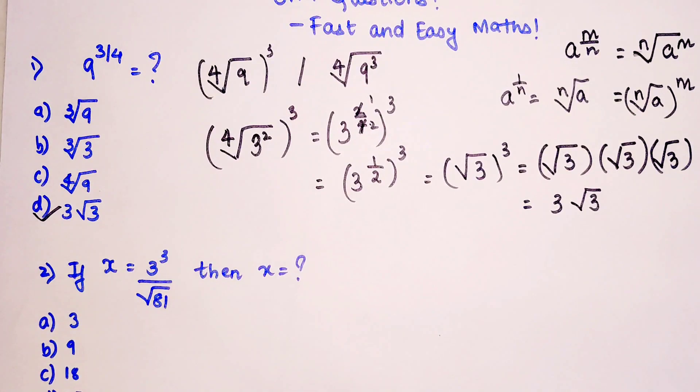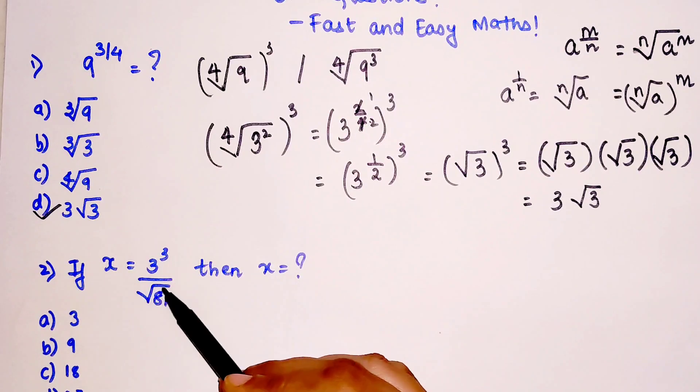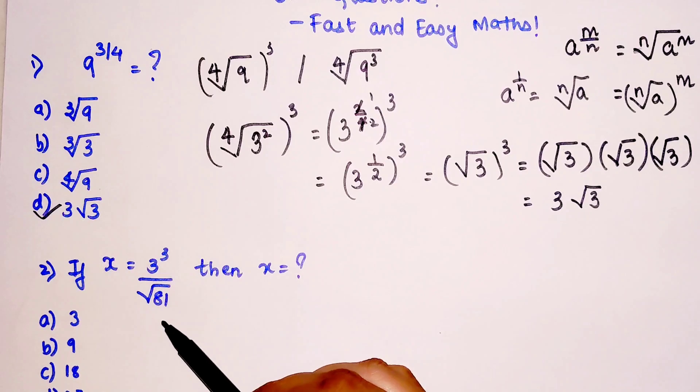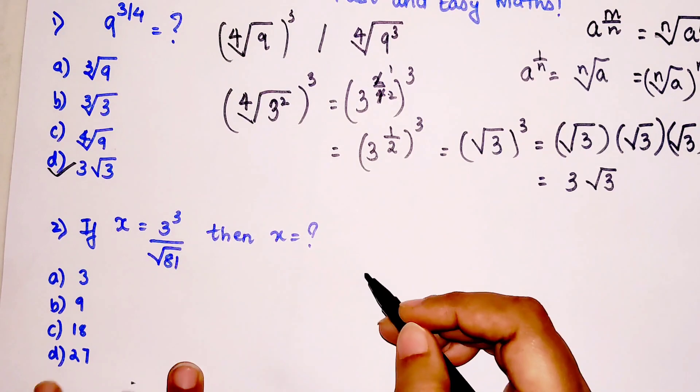So now the next question is: if x is equal to 3 raised to 3 upon root of 81, then x is equal to what? And these are the options. Now very quickly.